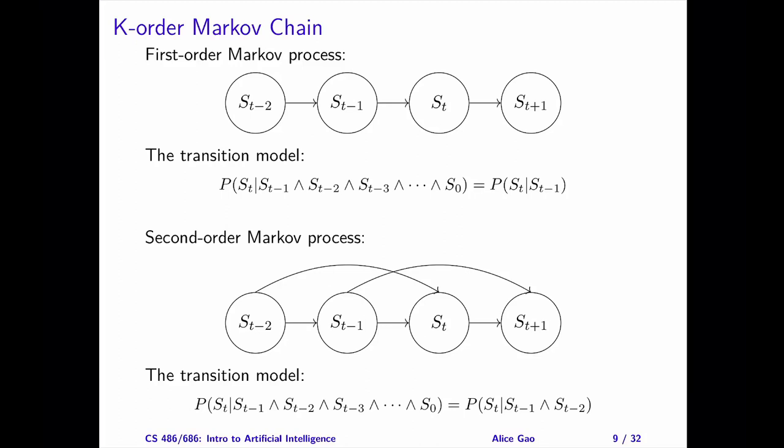Using our new assumption, we can define a k-order Markov chain. Each state depends on the k previous states.